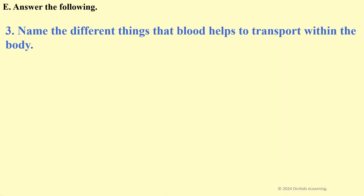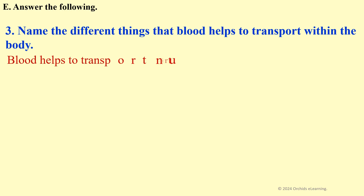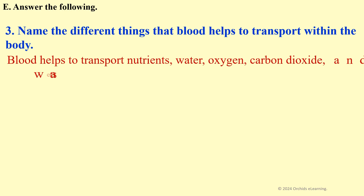Name the different things that blood helps to transport within the body. Blood helps to transport nutrients, water, oxygen, carbon dioxide, and waste products.